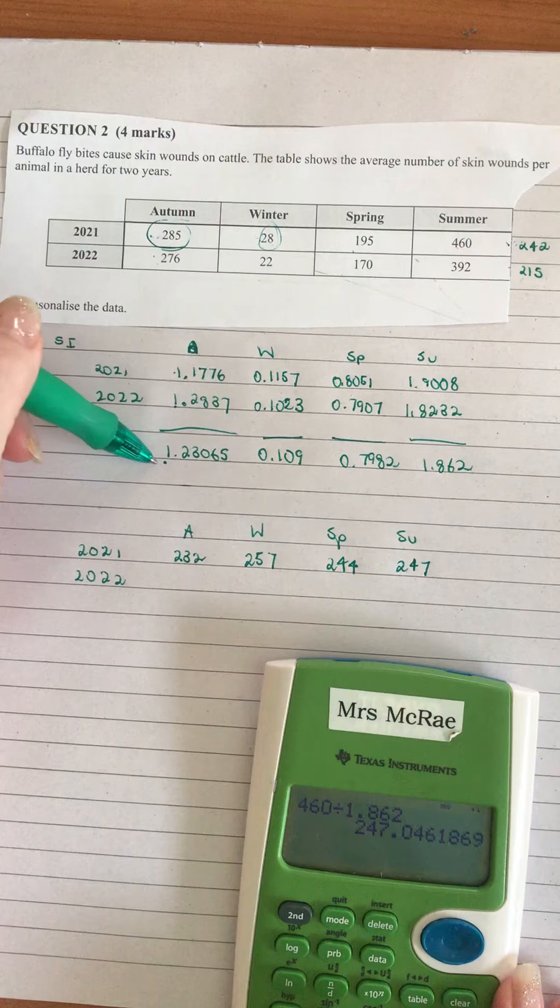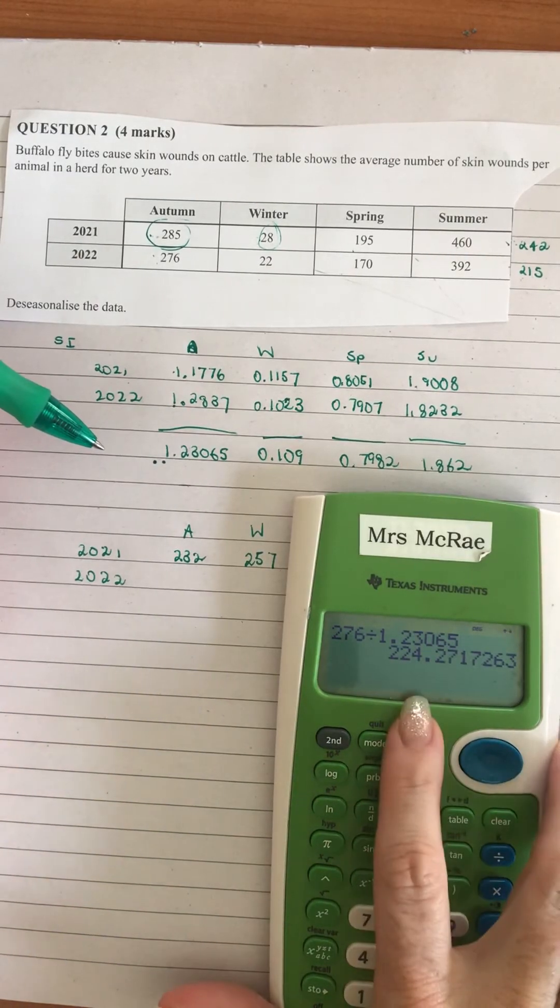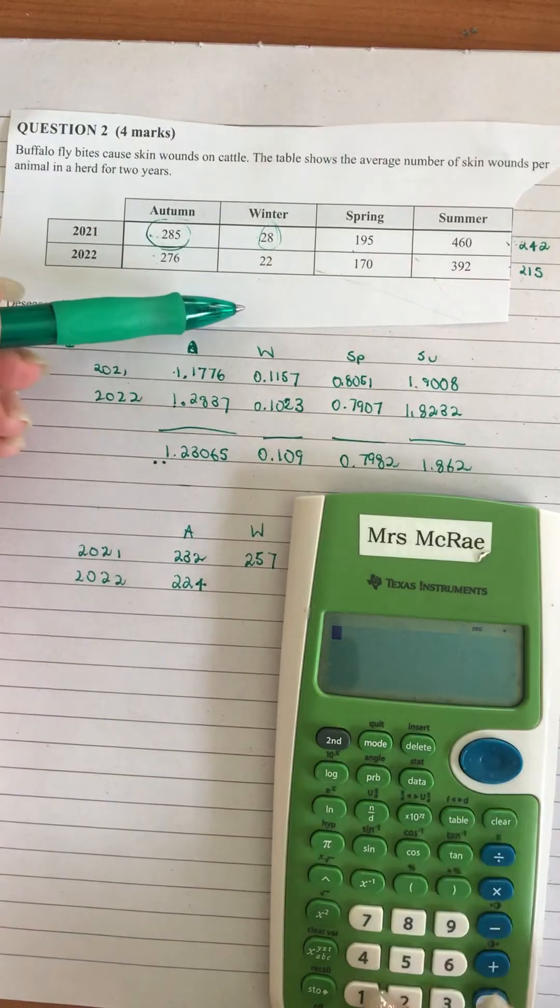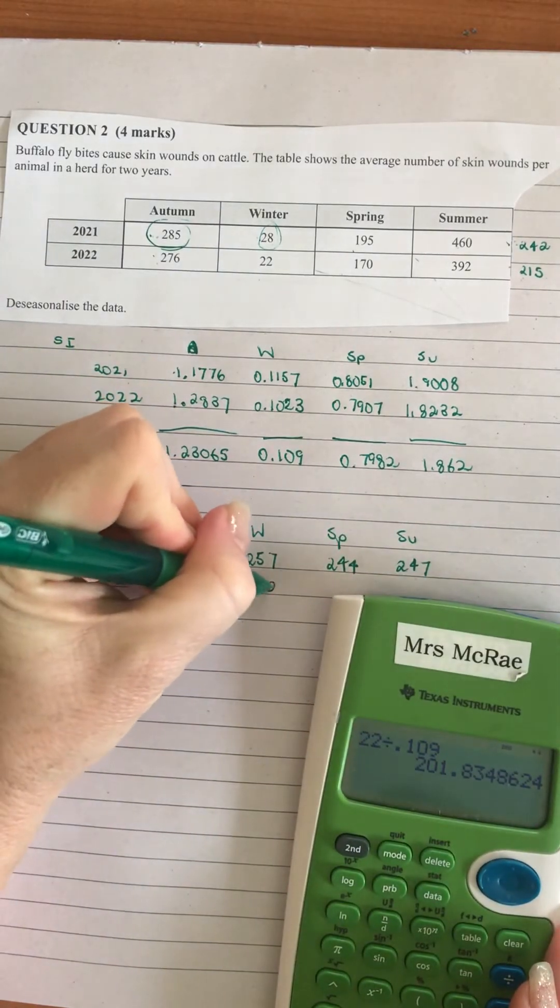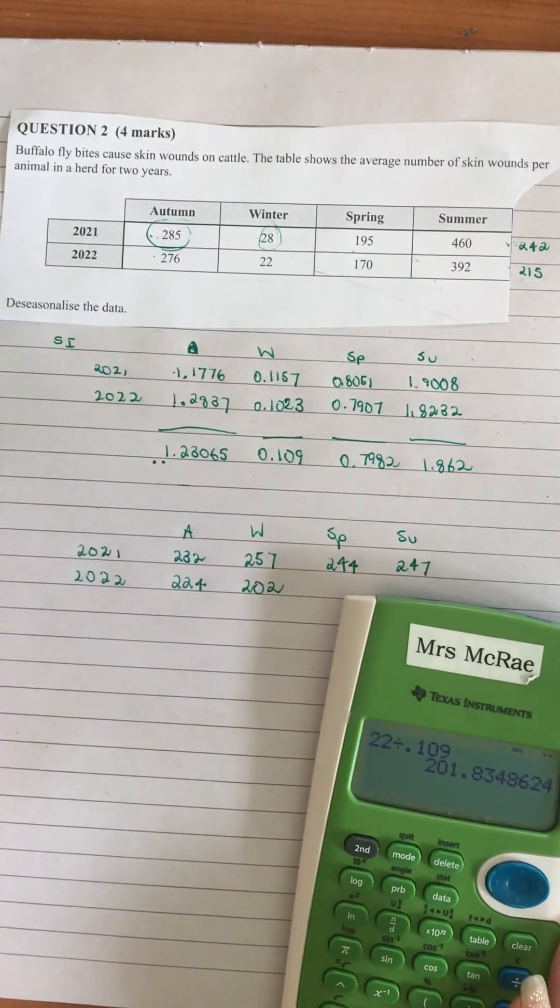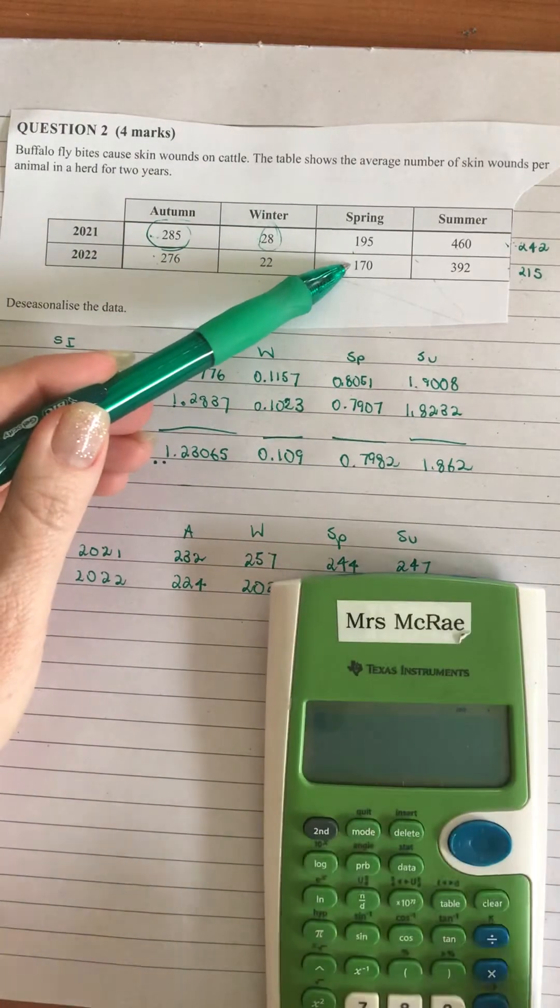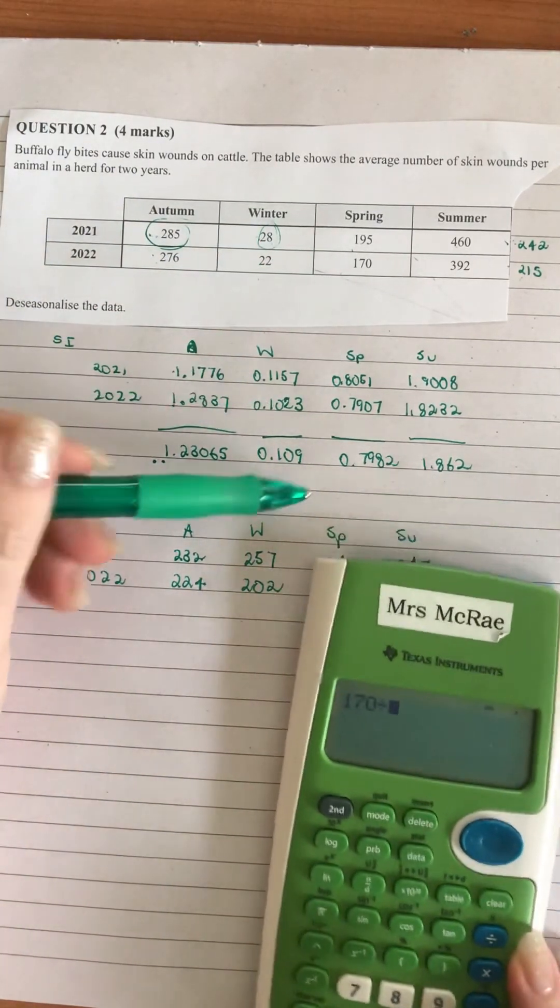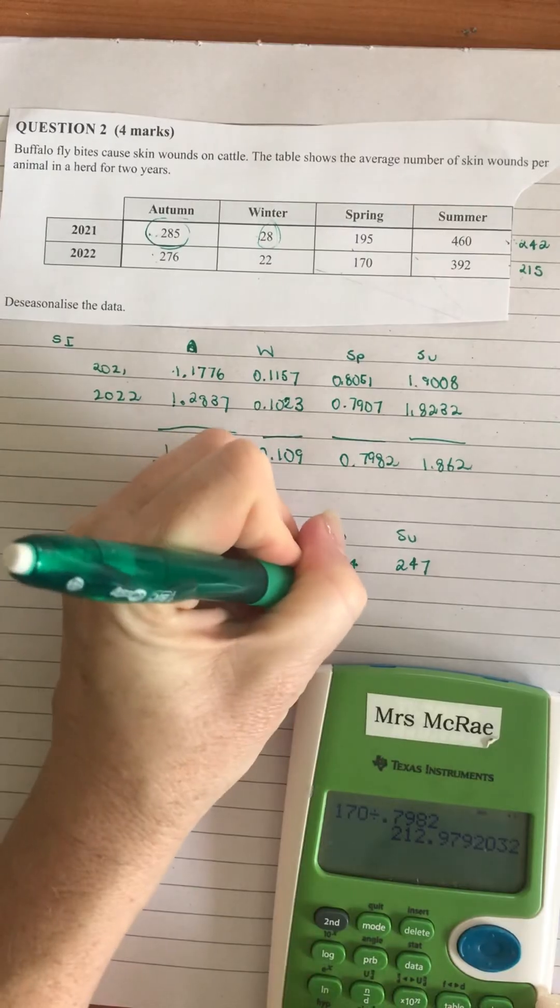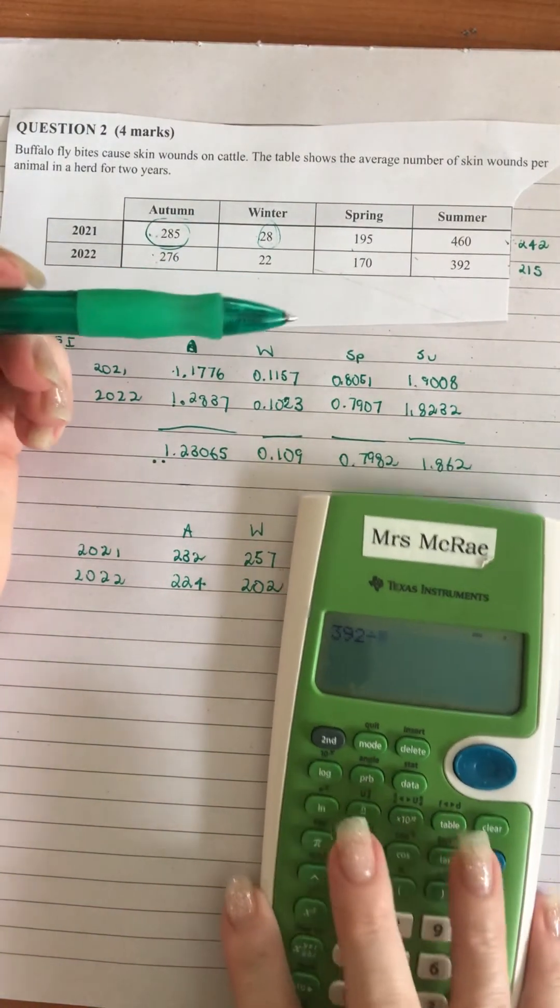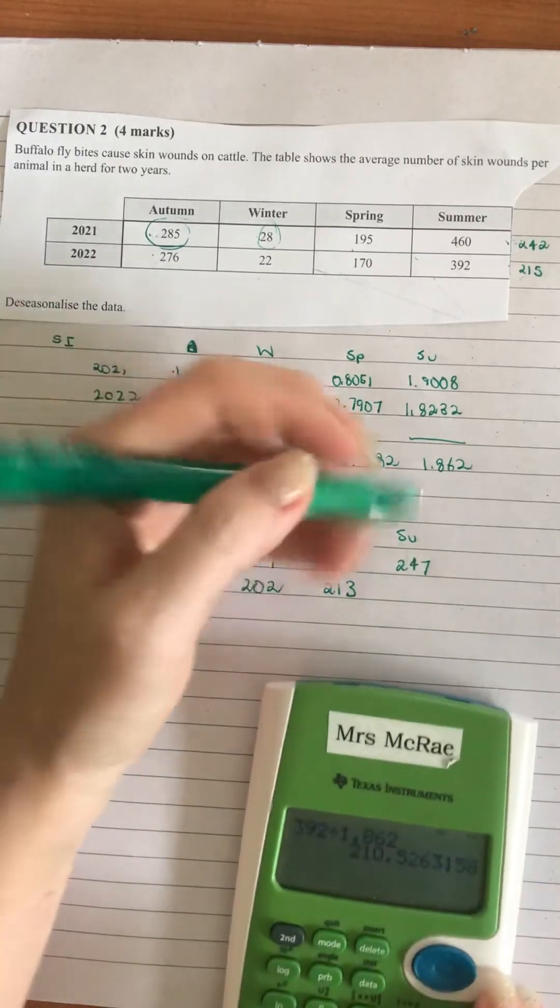Then for the next row, 276 divided by 1.23065 gives me 224.27, so I'll round that to 224. My 22 divided by 0.109 gives me 201.83, so I'll round that to 202. The reason I'm rounding them to whole numbers is because my table was whole numbers and we were talking about skin wounds per animal, so that was a whole number. Then we've got our 170 divided by 0.7982 and we get 212.9, so we'll round that to 213. And then last one, we get our 392 divided by 1.862 and that gives us 210.52, so we round that to 211.